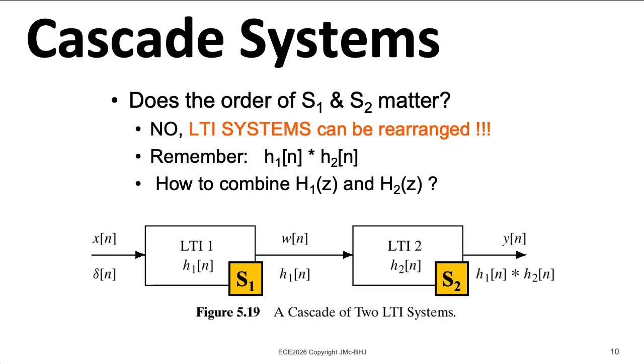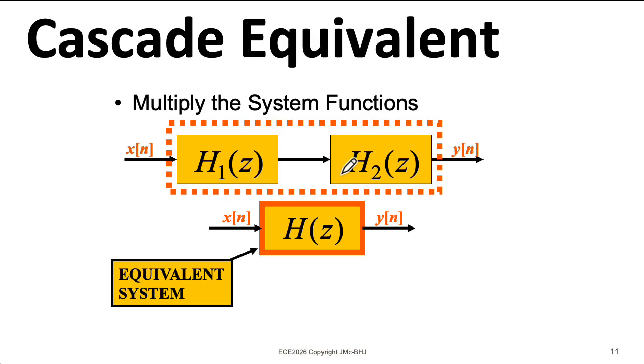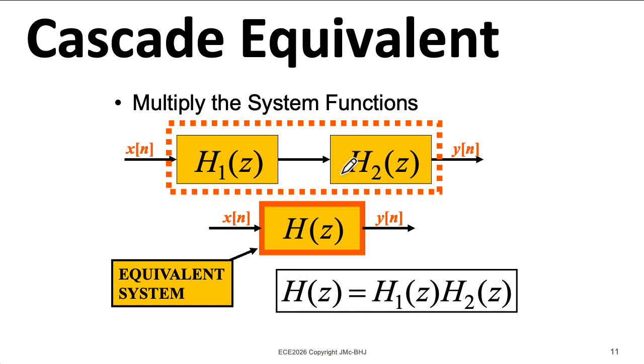We've previously seen that if you have a couple of linear time invariant systems in series, you can exchange the order of the systems, and in particular, you could replace that series of systems with a single system whose impulse response is given by the convolution of the impulse responses of the individual systems. So if you want to do things in terms of Z-transforms, you can replace your cascade of LTI systems with a single LTI system whose system function is given by the product of the system functions of the individual systems.